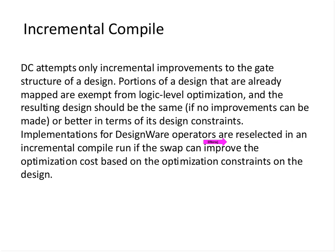Incremental compile will try to fix any timing violation that might arise out of changing a small constraint - for example changing an input or output delay. The resulting design will be either the same (if no improvements can be made) or slightly better. For example, for a design that takes 8 hours to do a full compile, it might take just 1 hour to do an incremental compile. Please do not use incremental compile for major changes like increasing the clock frequency - that is a big change and I would recommend a full compile. For small changes such as changing the input delay a bit, the driving cell of some input, or the load on an output port, you can use incremental compile.